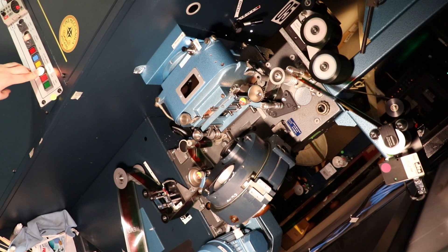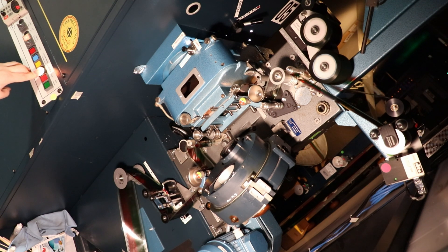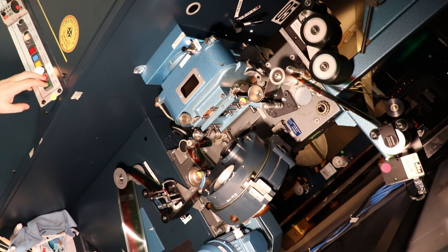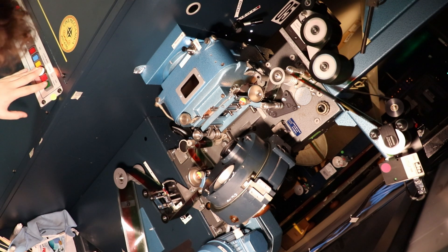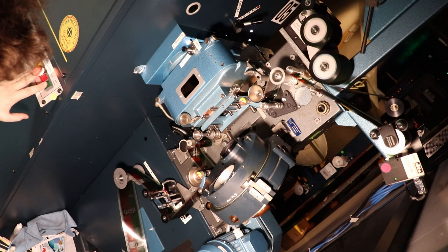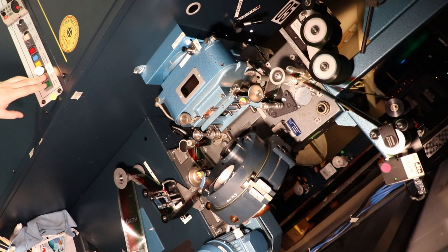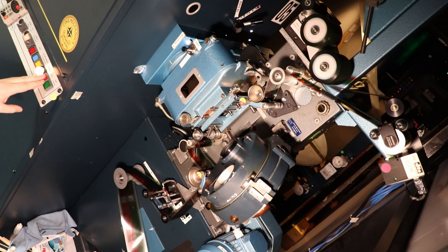Next is the projector. This is the most complicated, but as far as I'm concerned, interesting part of the process. This is a Cinemeccanica Victoria 8, but the mechanics of film projection are universal between almost all machines. This is where the magic really happens.